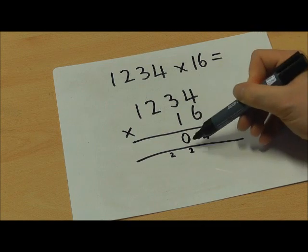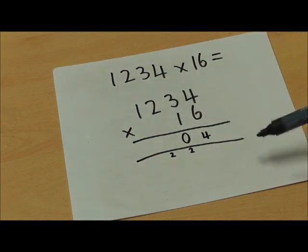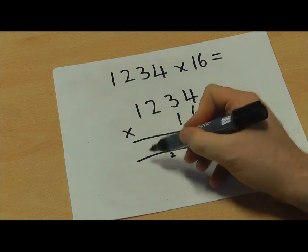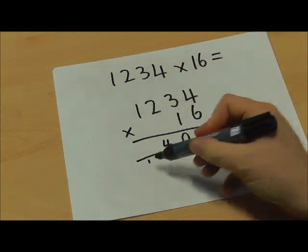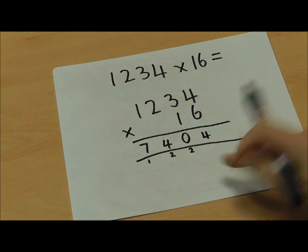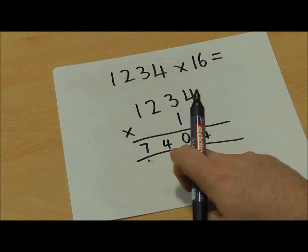2 times 6 is 12, add 2 is 14, and 1 times 6 is 6, plus 1 is 7. I'm going to actually get rid of these numbers I've carried over so that they don't get in the way of my next calculation.